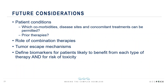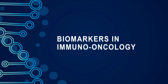Immuno-oncology is a rapidly growing area with ongoing challenges for clinical trial development. Key considerations include which patient comorbidities are tolerated, which diseases and disease levels are eligible, what concomitant and prior treatments are permitted, and the role of combination therapies. Understanding tumor escape mechanisms and developing biomarkers to identify patients likely to benefit — as well as those at high risk for toxicity — remains critically important.